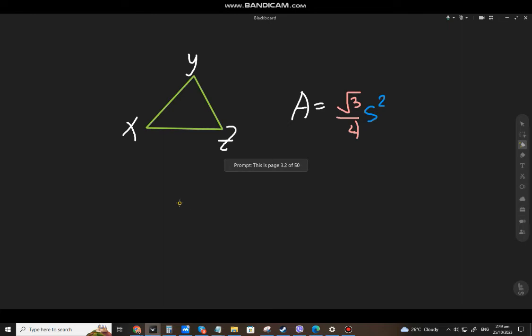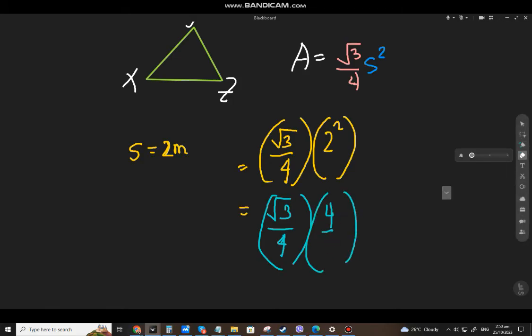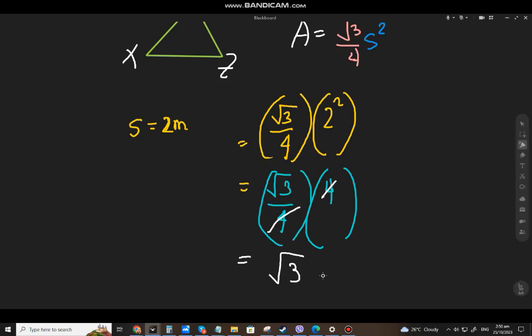So let's have another example. Let's have 2 meters, just 2 meters. So apply just the formula: square root of 3 over 4 times 2 squared. So that will be square root of 3 over 4 times 4. You can cancel it, so what will be left is square root of 3, right?